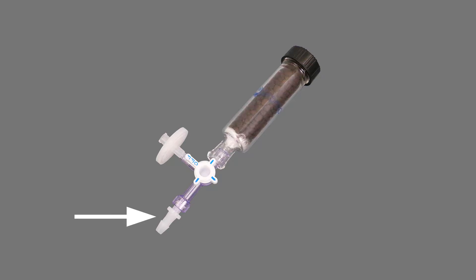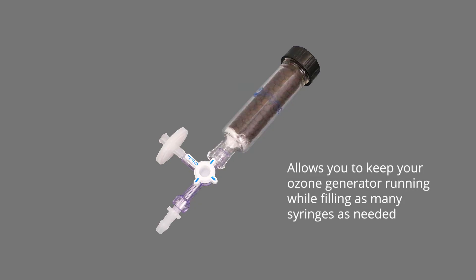The Ozone Syringe Filling System is a manual, simple, and effective way to fill any size syringe. It comes with one female Luer Lock fitting, a 0.22 micron filter, and a built-in ozone filter system which allows you to keep your ozone generator running while filling as many syringes as needed.